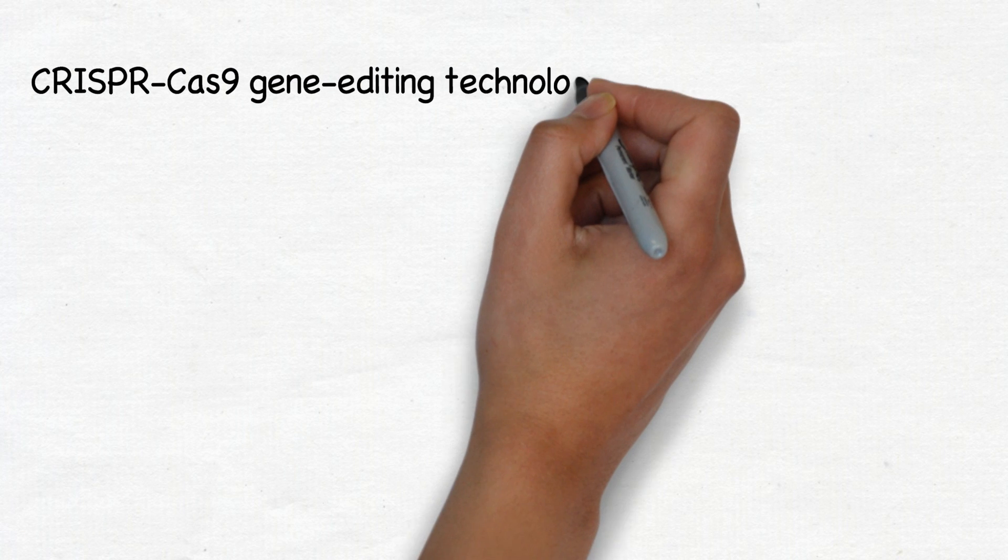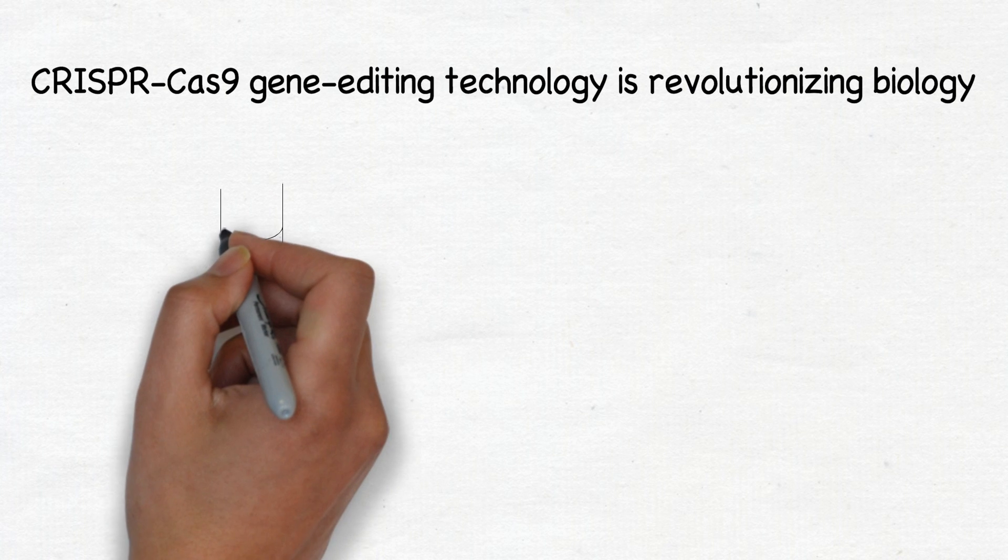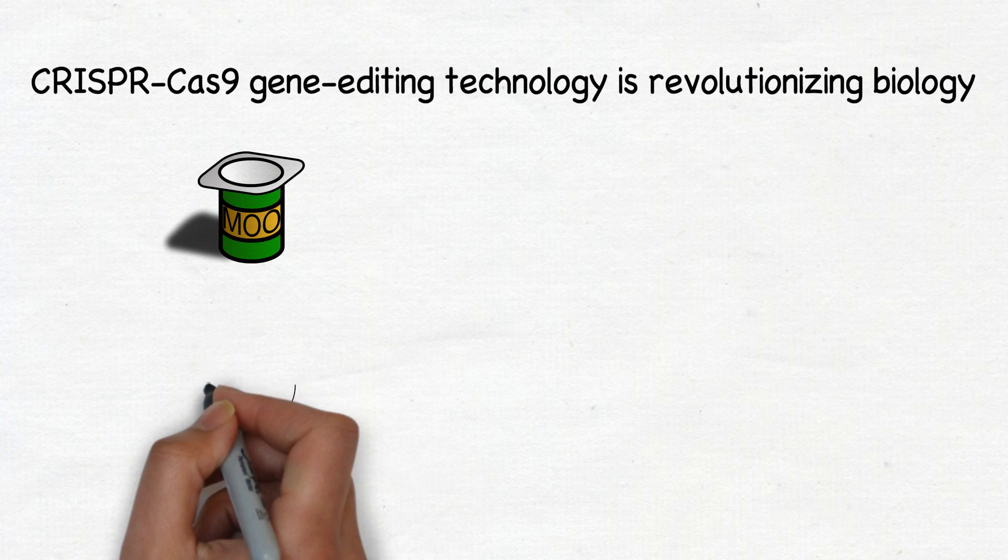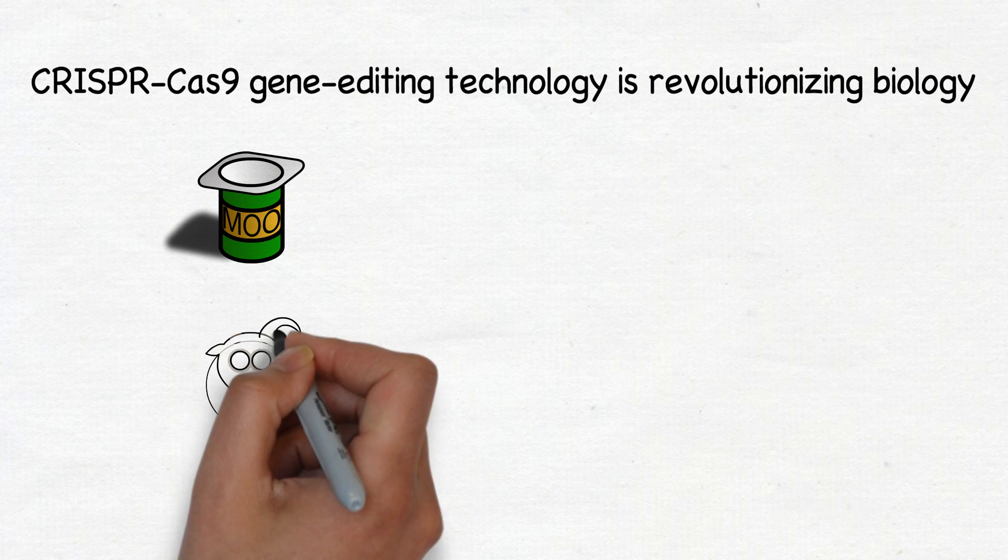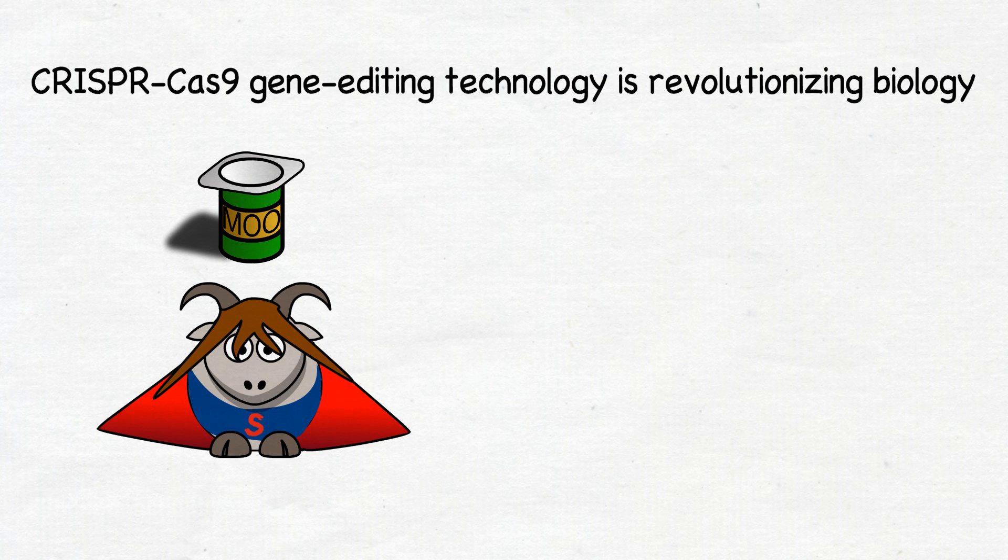CRISPR-Cas9 is the gene editing technology that is revolutionizing biological research. Derived from a bacterial defense system discovered in the yogurt industry, it has already been used to engineer crops and livestock, like super goats that produce more meat and have longer hair for making wool.